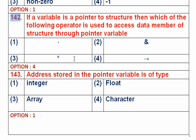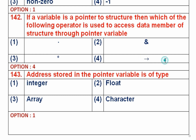Question number 142: If a variable is a pointer to a structure, which operator is used to access a data member through the pointer? Option 1 is dot operator, option 2 is ampersand, option 3 is star operator, option 4 is arrow operator. The dot operator accesses members via a normal structure variable. Ampersand gets the address of variables. Asterisk is the indirect accessing operator. The arrow operator accesses a member when a pointer points to the structure variable. So option 4, arrow operator, is the right answer.